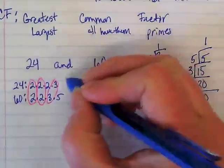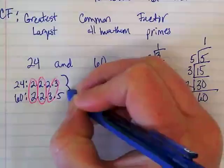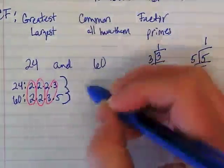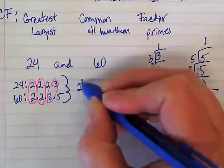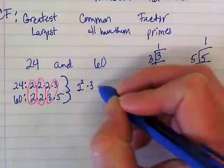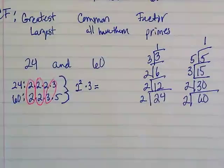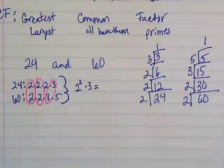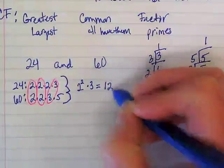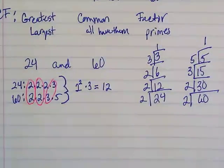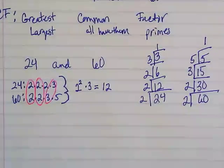So the GCF of 24 and 60 is 2 to the second power times 3, which equals 12. 2 times 2 is 4, times 3 is 12. That's how we find GCF of two numbers.